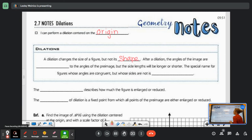So after a dilation, the angles of the image are congruent to the angles of the pre-image, but the side lengths will be longer or shorter. The special name for figures who have angles that are congruent, but whose sides are not, is similar.